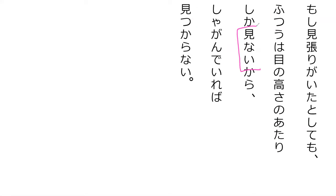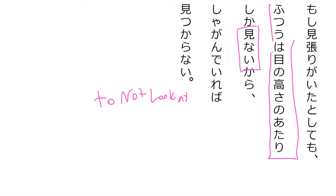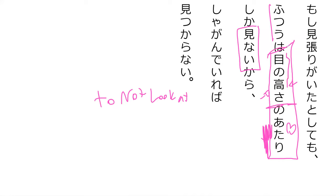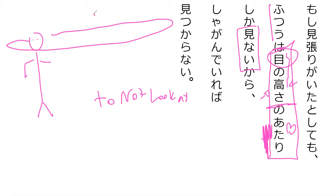This is mienai — it's not saying mieru meaning 'to be able to see,' it's saying minai as in 'to not look at.' So the only thing they look at normally is the surroundings at the level of their eyes — me no takasa no atari. So basically they see things at eye level, but not really above it or below it. That's the only thing they see.